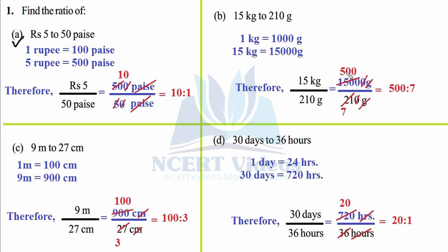The required ratio for part (b) is 500 to 7. For part (c): 9 meters to 27 centimeters. Units are not the same, but 1 meter equals 100 centimeters, so 9 meters equals 900 centimeters. Writing the ratio: 900 centimeters divided by 27 centimeters — units cancel. Reducing by 9: 9 ones are 9, 3 nines are 27. Not further reducible. The required ratio is 100 to 3.